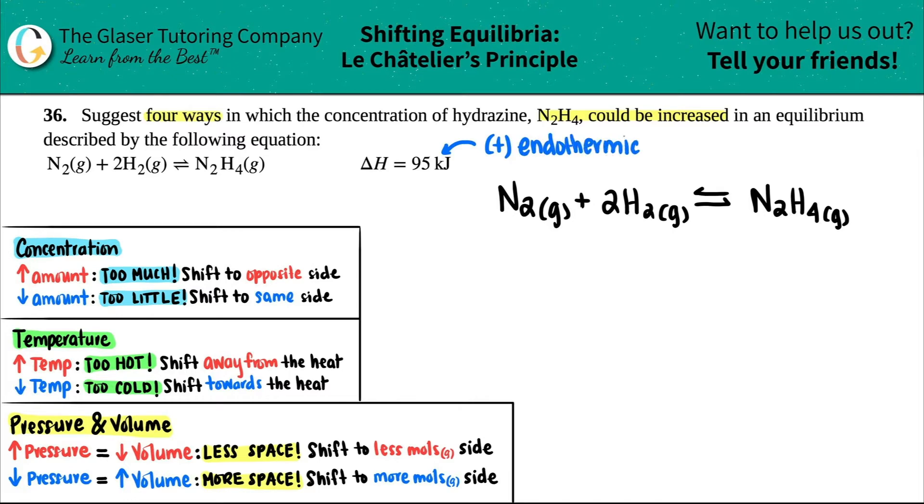That means that you absorbed heat. So whenever you see a positive delta H, it's endothermic, it's absorbing heat, and that is always going to be on the reactant side. So as like a little helpful guide, just say plus heat on what side you have the heat on. The heat on the reactant side is a endothermic reaction.